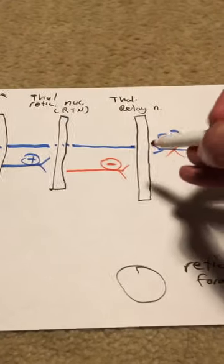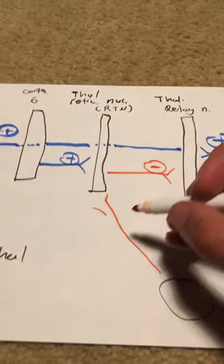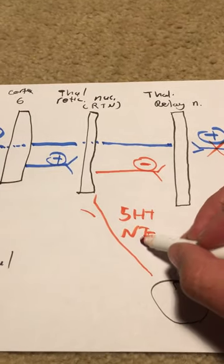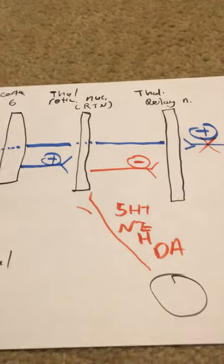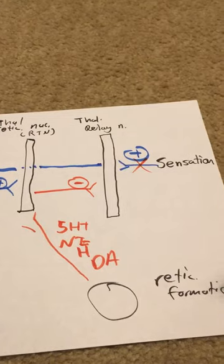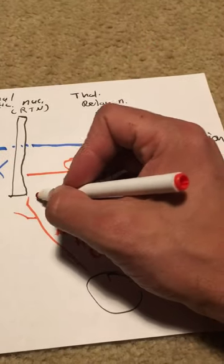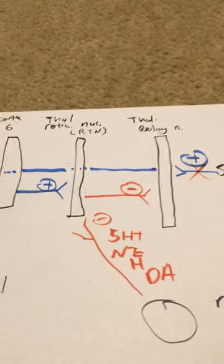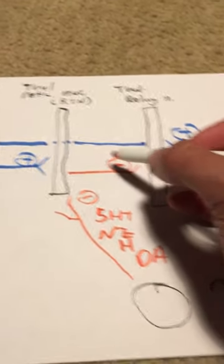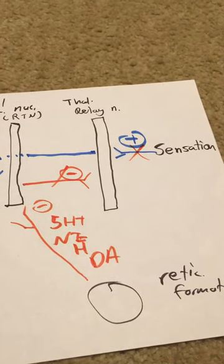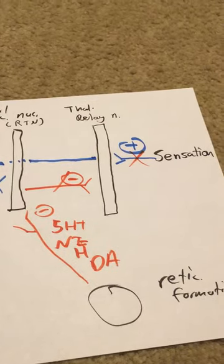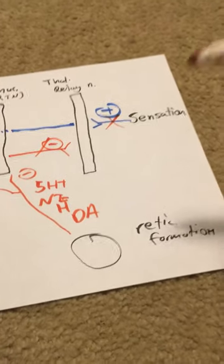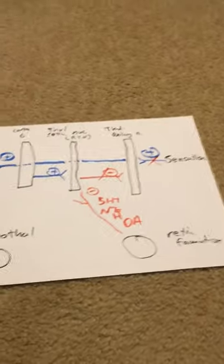This is where your reticular formation comes into play. Reticular formation is gonna release a whole slew of things: serotonin, norepi, histamine, dopamine, etc. Remember these are coming from periaqueductal gray, locus coeruleus, median raphe nucleus, all those places. All these are going to inhibit my Thalamic Reticular Nuclei. So if I want to be aware, want to be aroused, I'm gonna inhibit my Thalamic Reticular Nuclei and thus disinhibit my Thalamic Relay Nuclei so that sensation can now travel through to my cortex. This is why damage to the reticular formation is a cause of coma. Without this you're unable to become aroused, unable to become awake and you're in a comatose state.